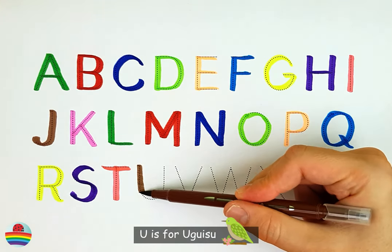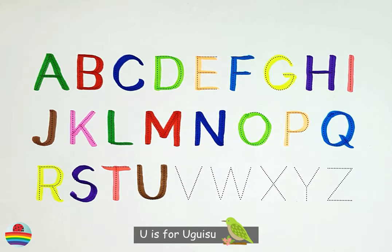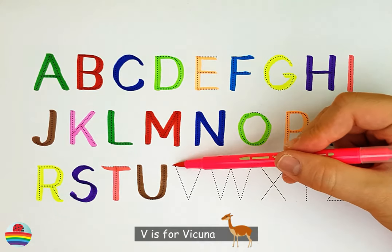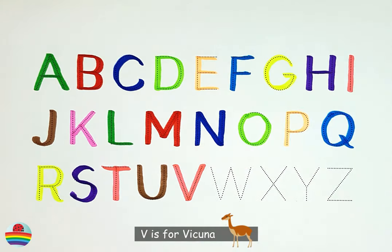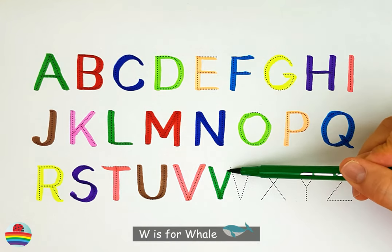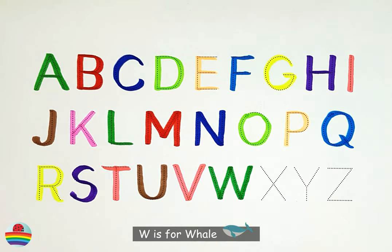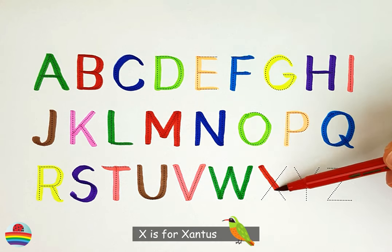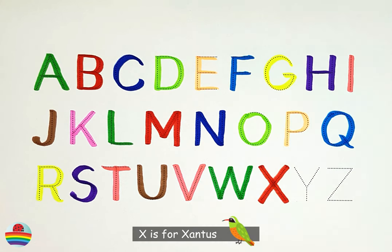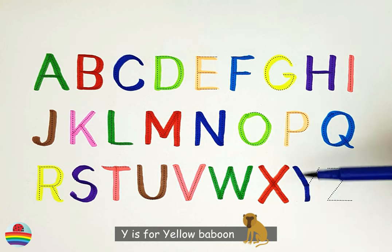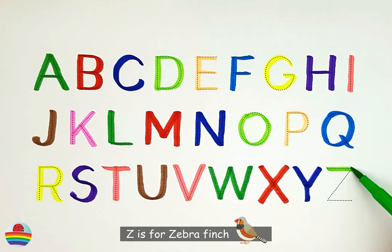U. U is for uguisu. V. V is for vicuna. W. W is for whale. X. X is for xantus. Y. Y is for yellow warbler. Z. Z is for zebra finch.